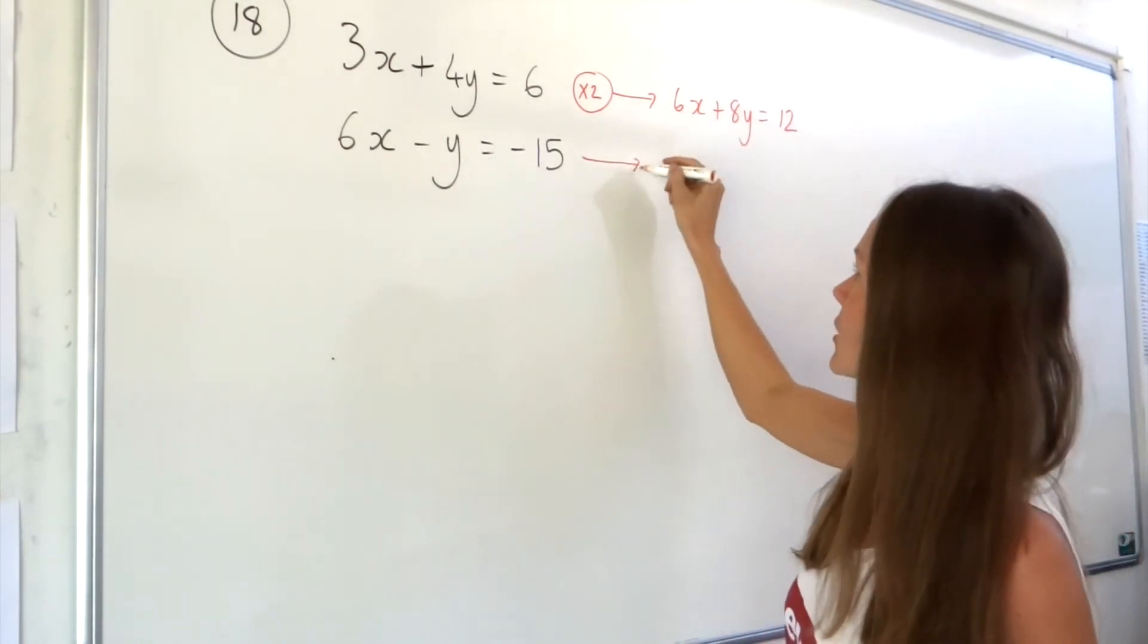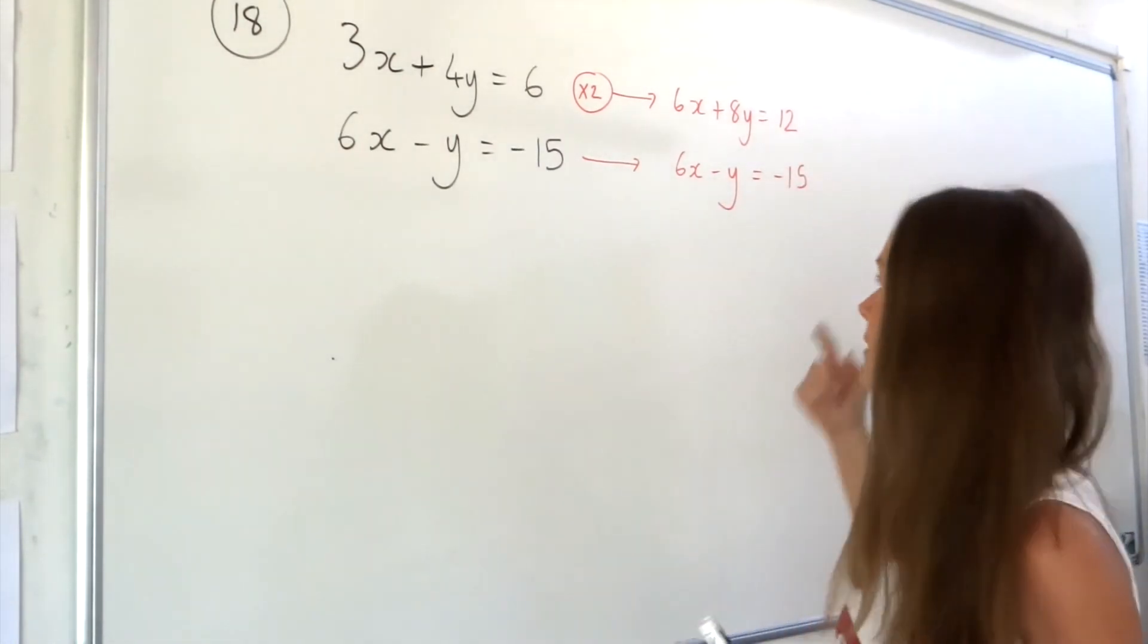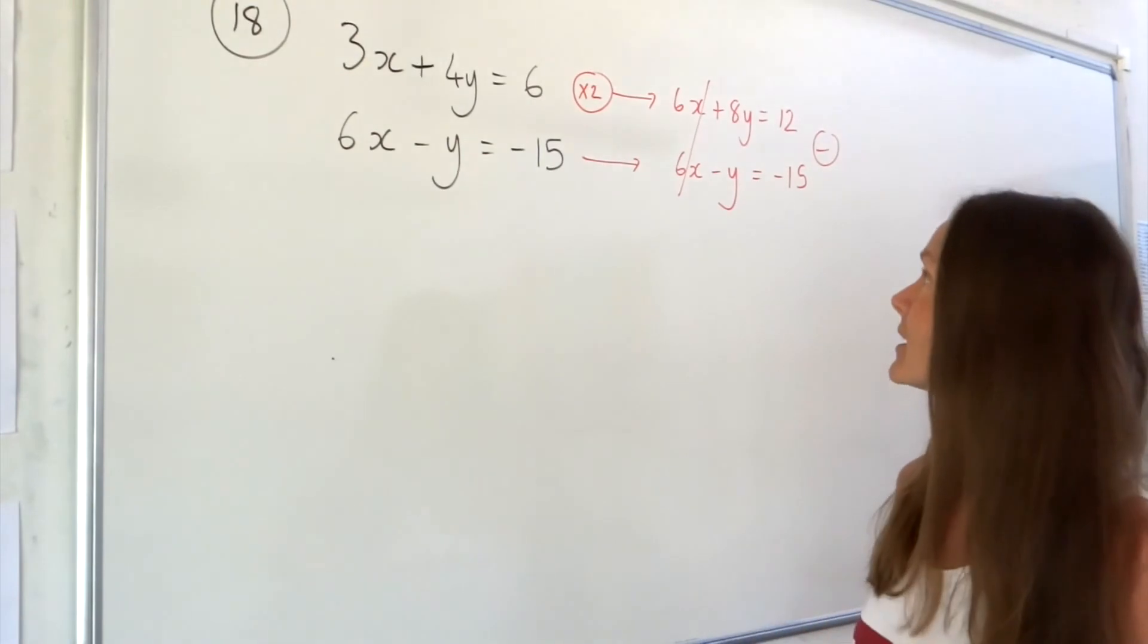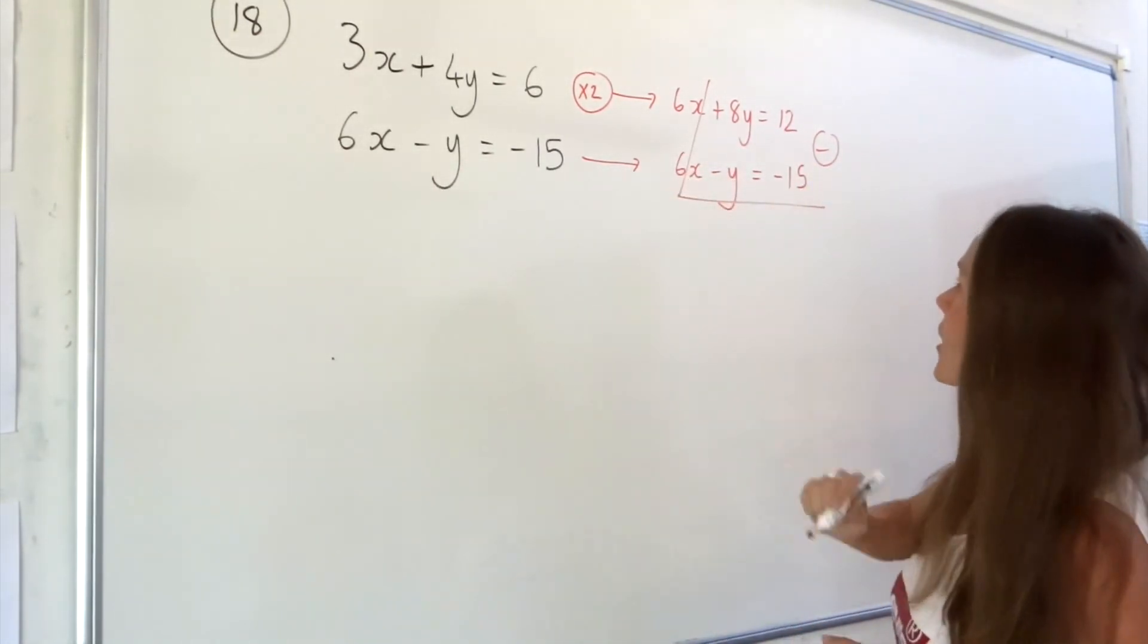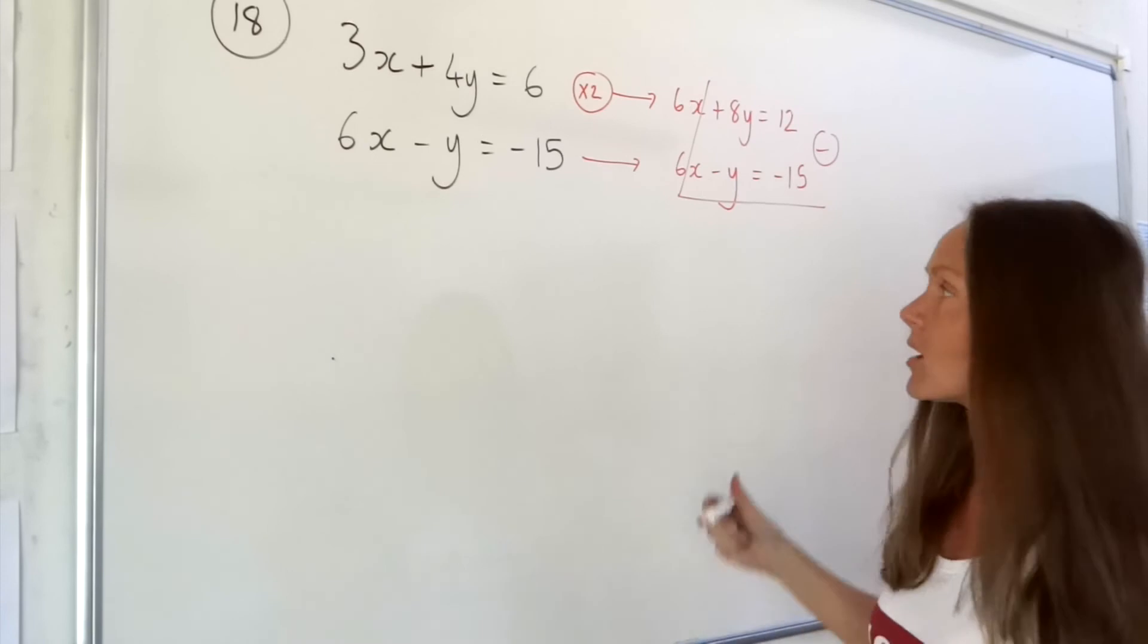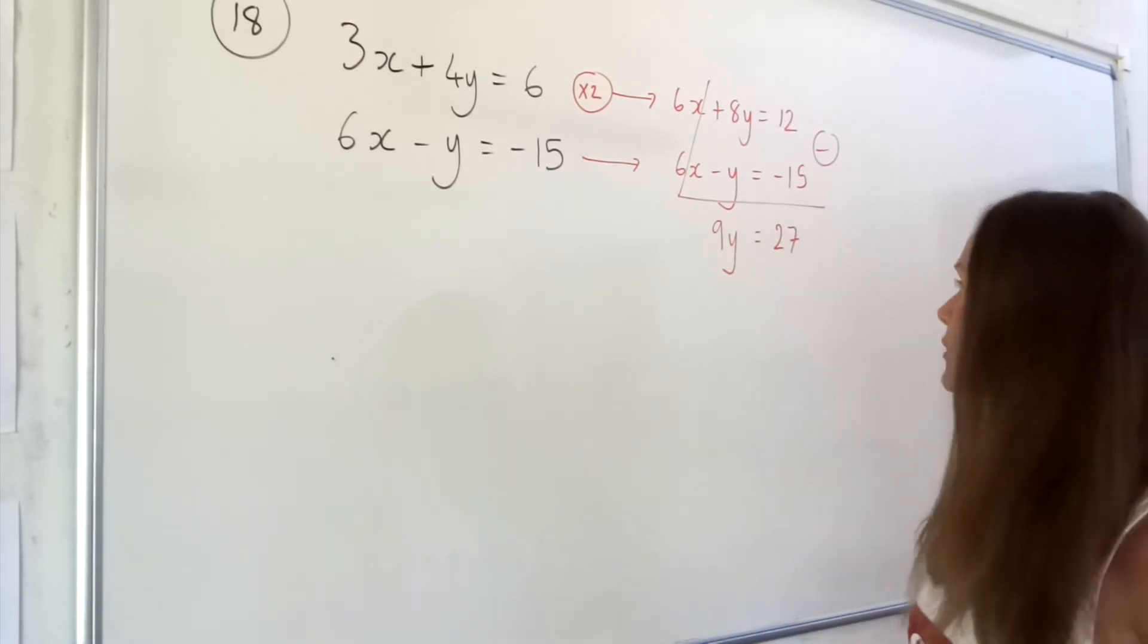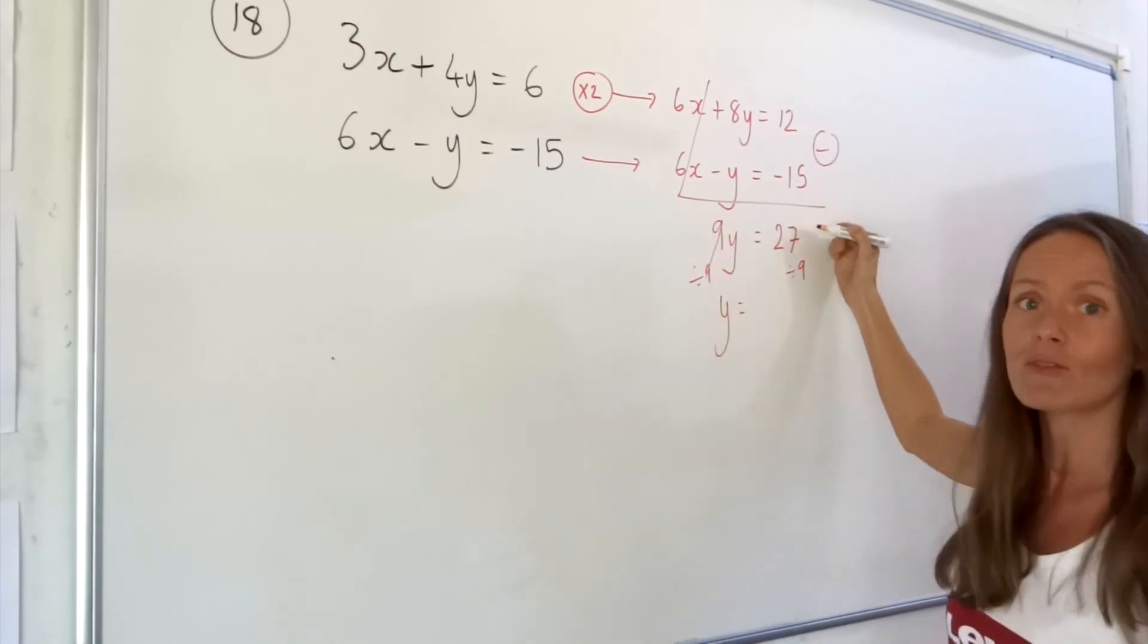The other equation stays the same but I'm still going to write it out again just over here so that they're underneath each other. If I subtract these two equations I can eliminate the 6x's. 6x take away 6x is zero. By subtracting those two equations I can eliminate x and it will give me an equation with just y values so I can solve and find the value of y. I'm going to subtract everything else, so 8y take away negative 1y is the same as 8y plus y which is 9y. And 12 take away negative 15 is the same as 12 plus 15 which is 27. If we divide by 9 on both sides we can find the value of y, so 27 divided by 9 is 3.